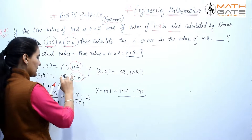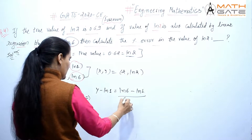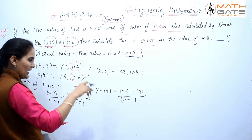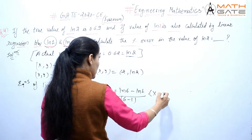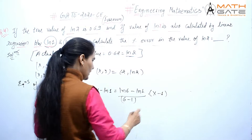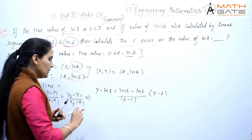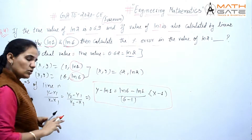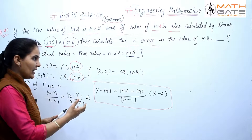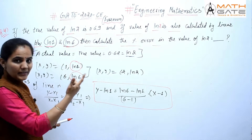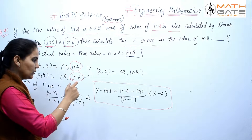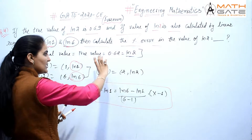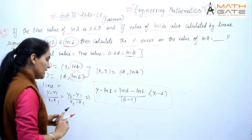Here x2 is 6 and x1 is 1, so x2 - x1 = 5. Multiplied by (x - x1), where x1 = 1. This is our line equation. Now we substitute x = 2 to get the approximate value of ln2.